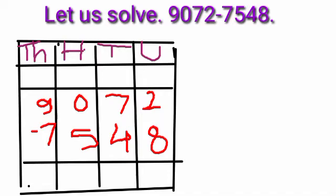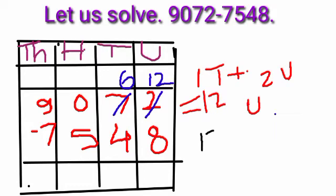We cannot subtract 8 units from 2 units. Therefore, we untie 1 ten from 7 tens. 6 tens remain in the tens place. 10 units from 1 ten plus 2 units make 12 units. 12 minus 8 is equal to 4 units.